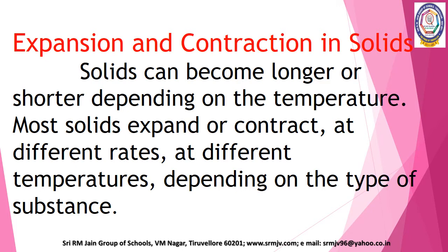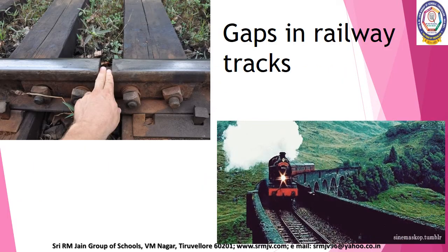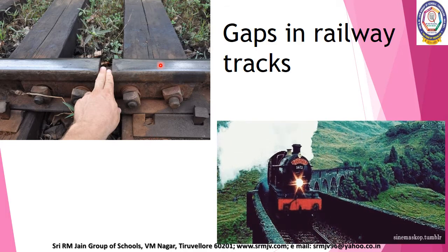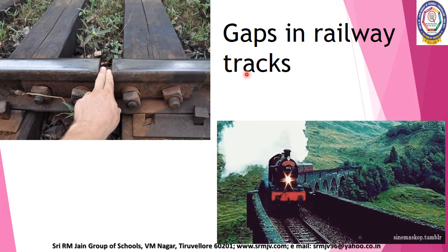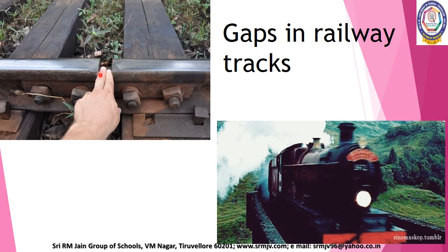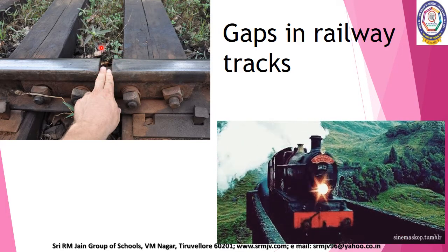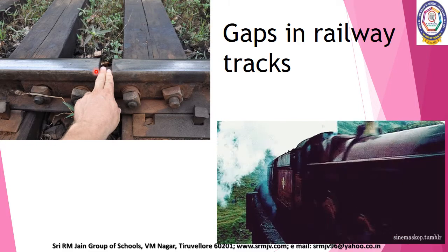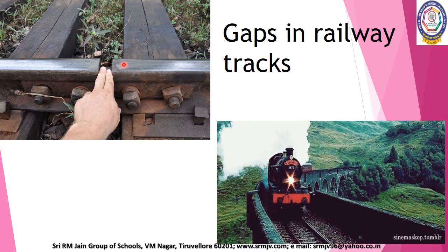Let us look at a few applications of expansion and contraction in solids. Solids can become longer or shorter depending on the temperature. Most solids expand or contract at different rates at different temperatures depending on the type of substance. First one: gaps in railway tracks. While laying the railway tracks, small gaps are left between the adjacent rails. These gaps are called expansion gaps. This is done to allow the iron rails to expand in hot summers.